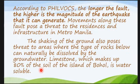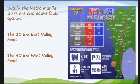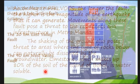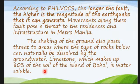According to research, the longer the fault, the higher the magnitude of the earthquake it can generate. The West Valley Fault is 90 kilometers long — covering the whole NCR and Metro Manila — so movements along this fault pose a serious threat to residences and infrastructure in Metro Manila.